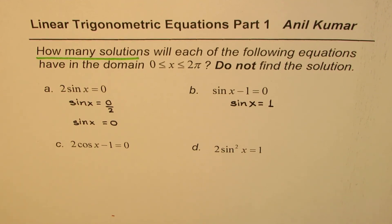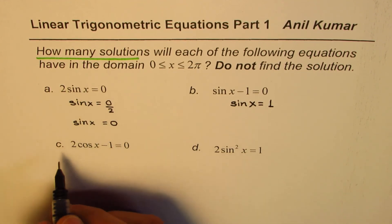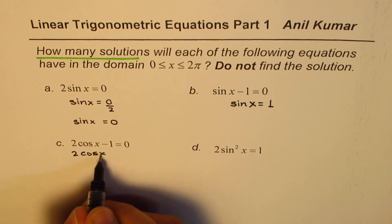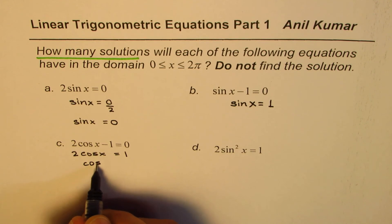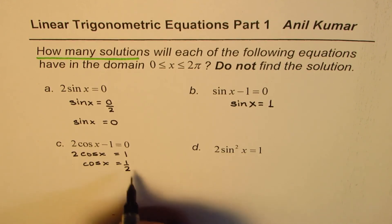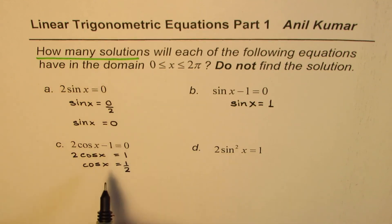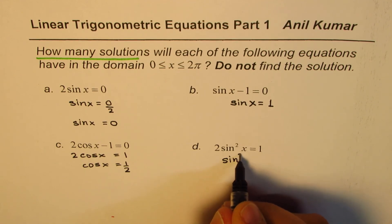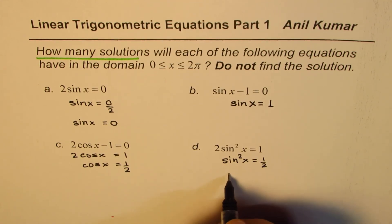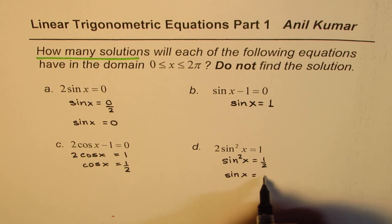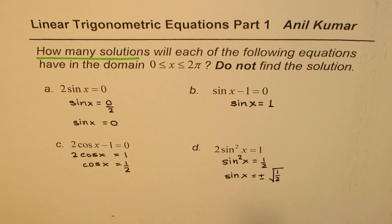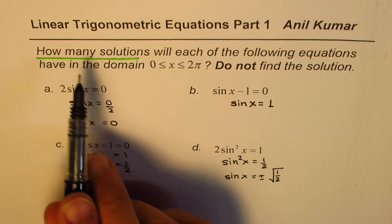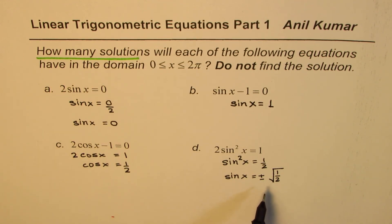For the third equation, we solve to get 2 cos x = 1, or cos x = 1/2, and we ask how many solutions that equation has. For the quadratic case, we get sin²x = 1/2, so sin x = ±1/√2. The question is how many solutions that equation will have — we don't need to find the actual values of x.